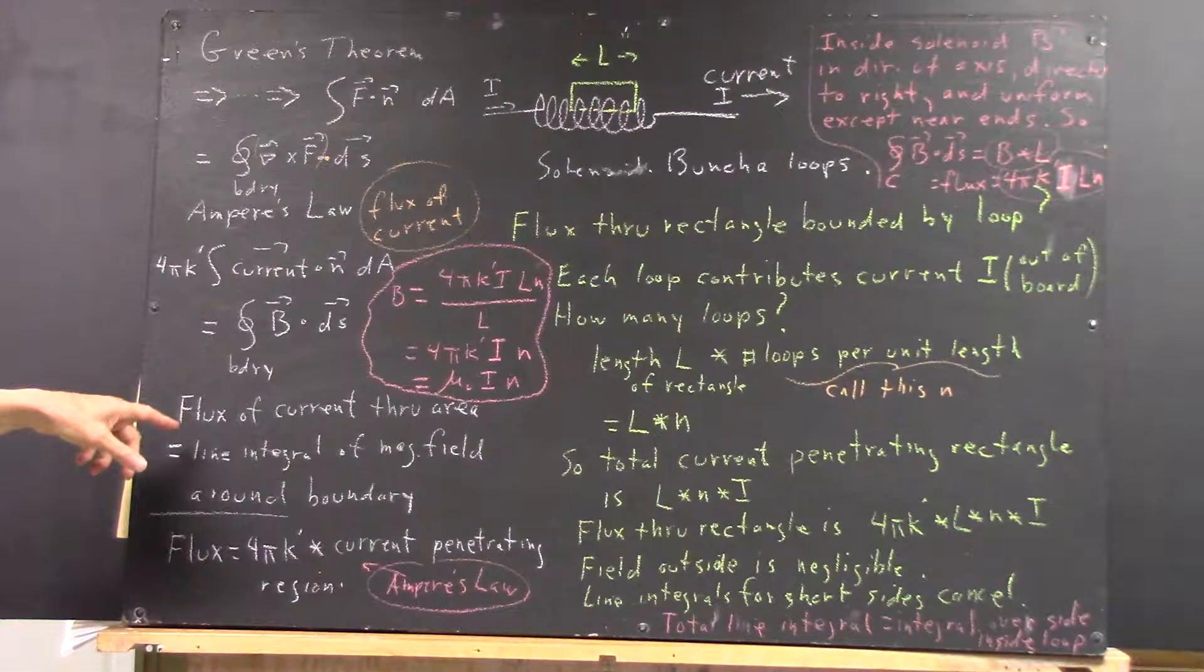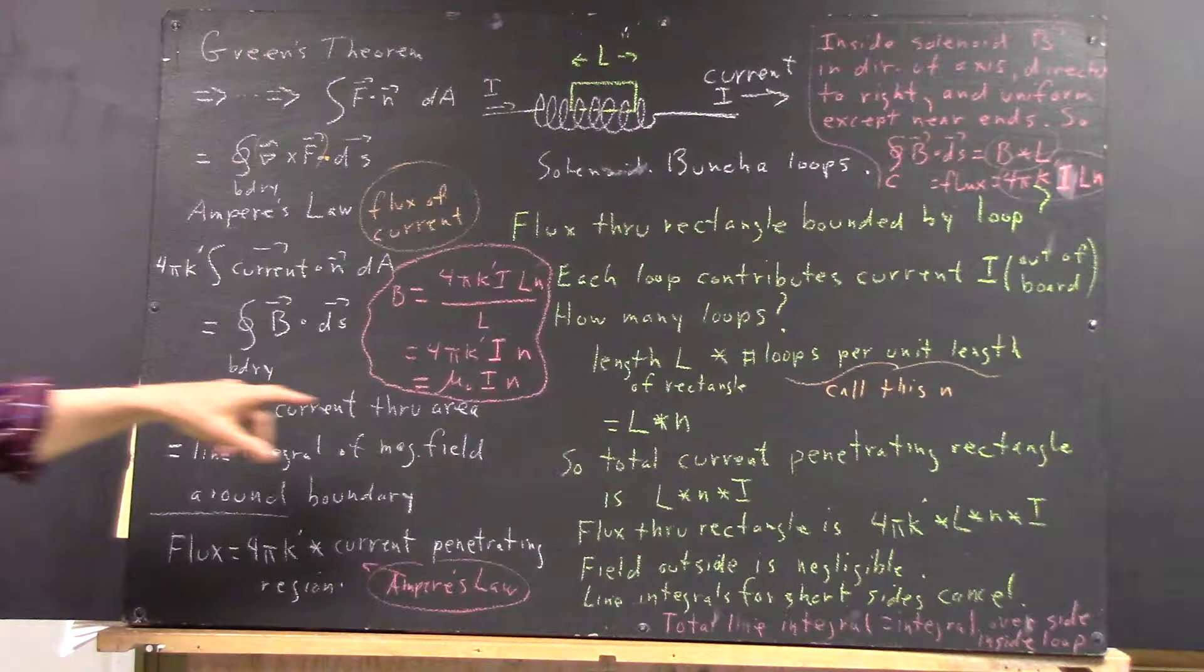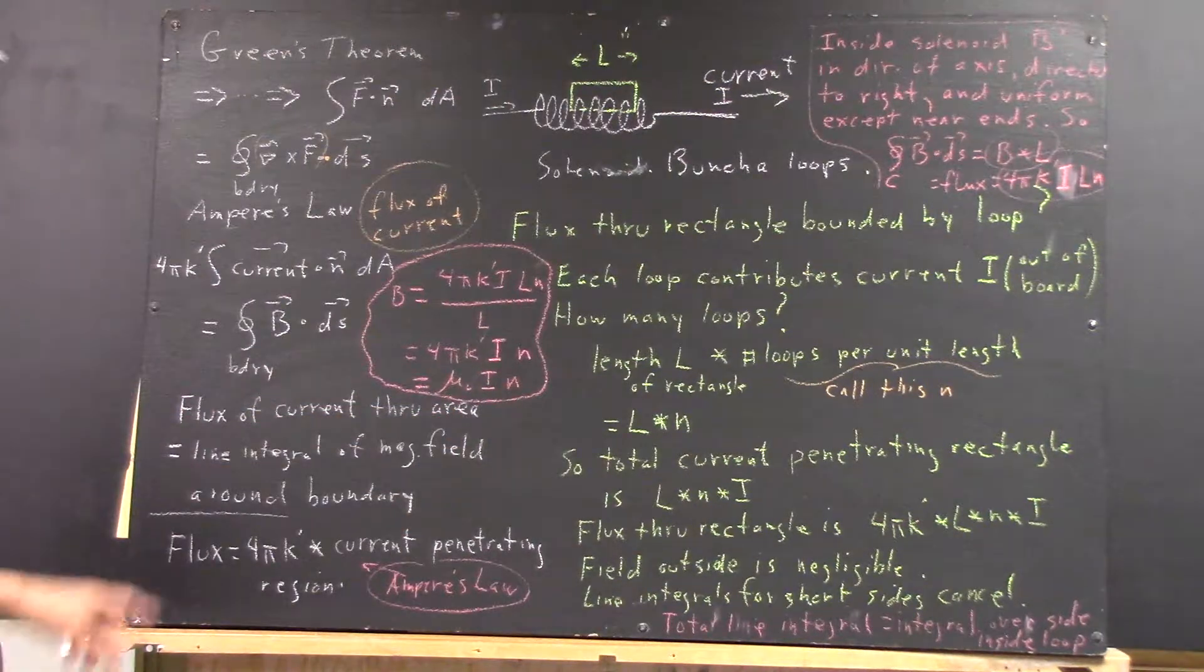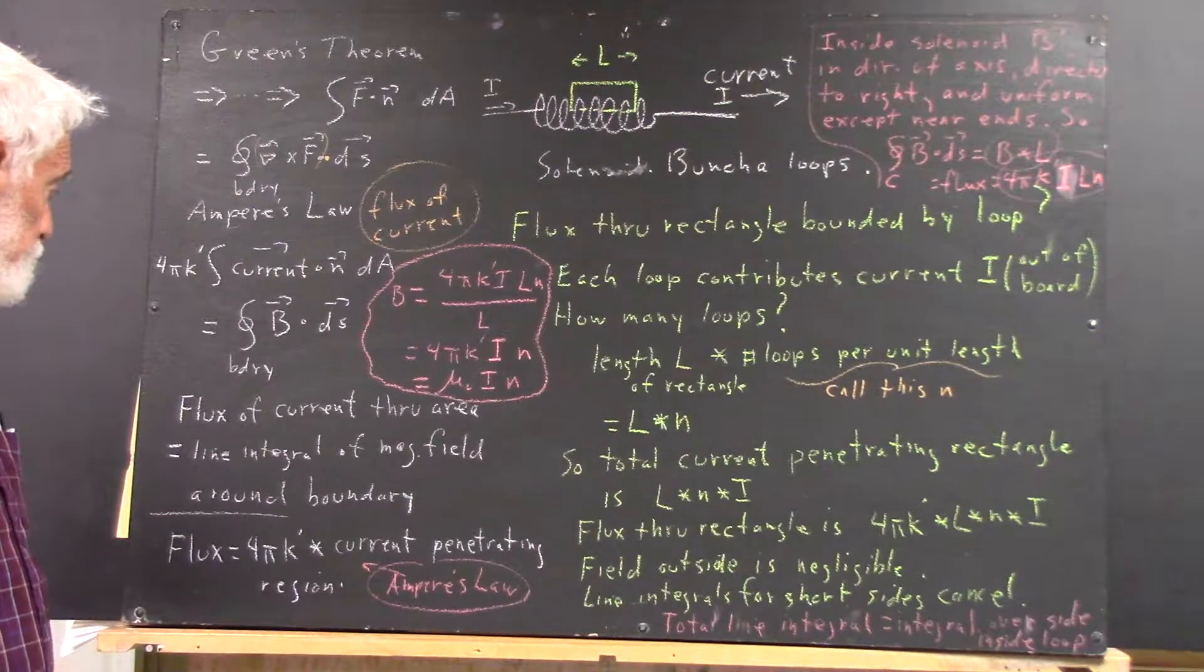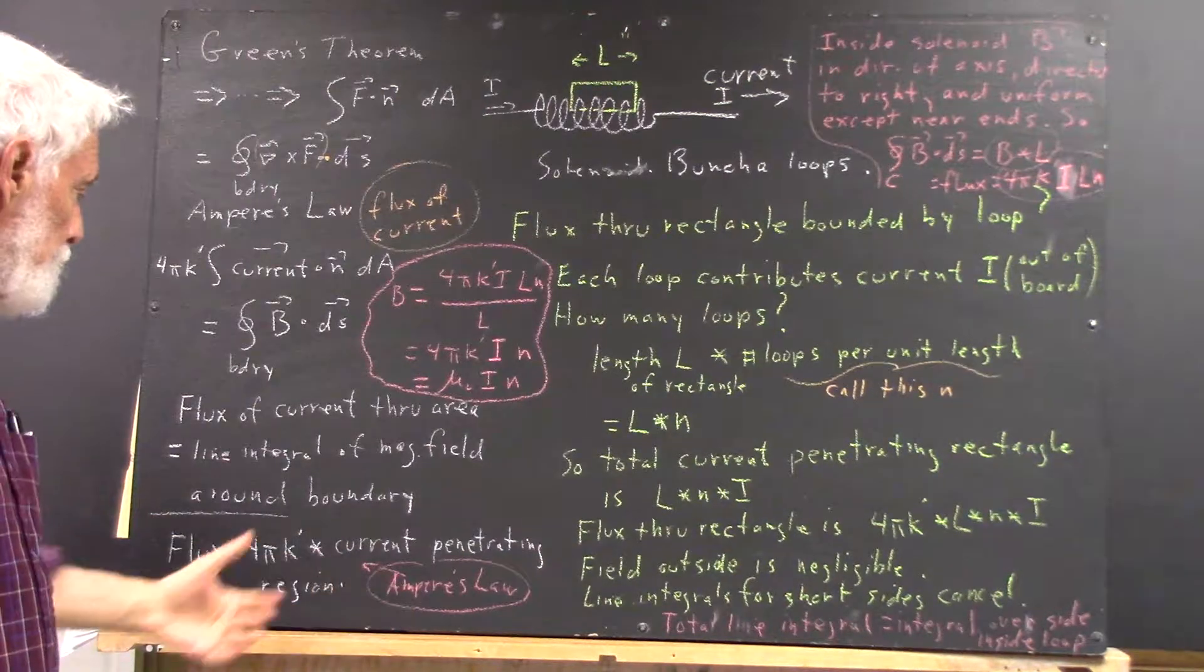So what this is saying now is that the flux of a current through some area is equal to the line integral of the magnetic field around the boundary. And that's Ampere's Law.